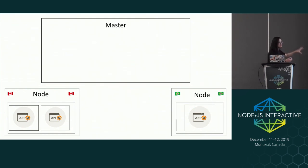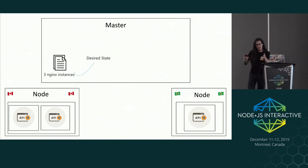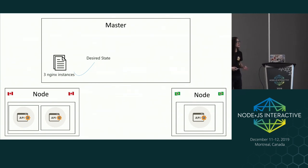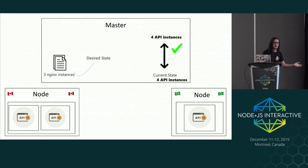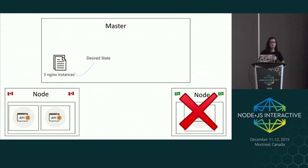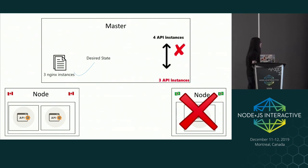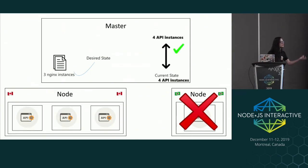Let's see the behavior of Kubernetes. We define a master manifest config file — JSON or YAML. We have a desired state: my desire is three instances — two in Canada, one in Brazil. My current state exactly matches my desired state. But imagine the server in Brazil stops responding. Kubernetes makes some checks, schedules a new instance to other nodes, and the node in Canada receives the missing pod, restoring the same goal.